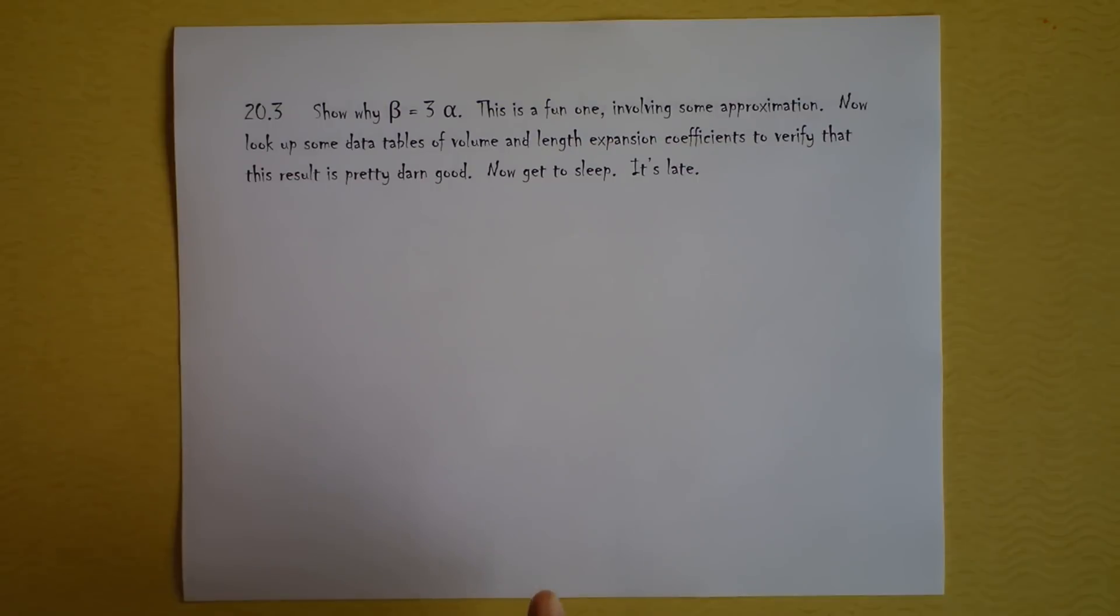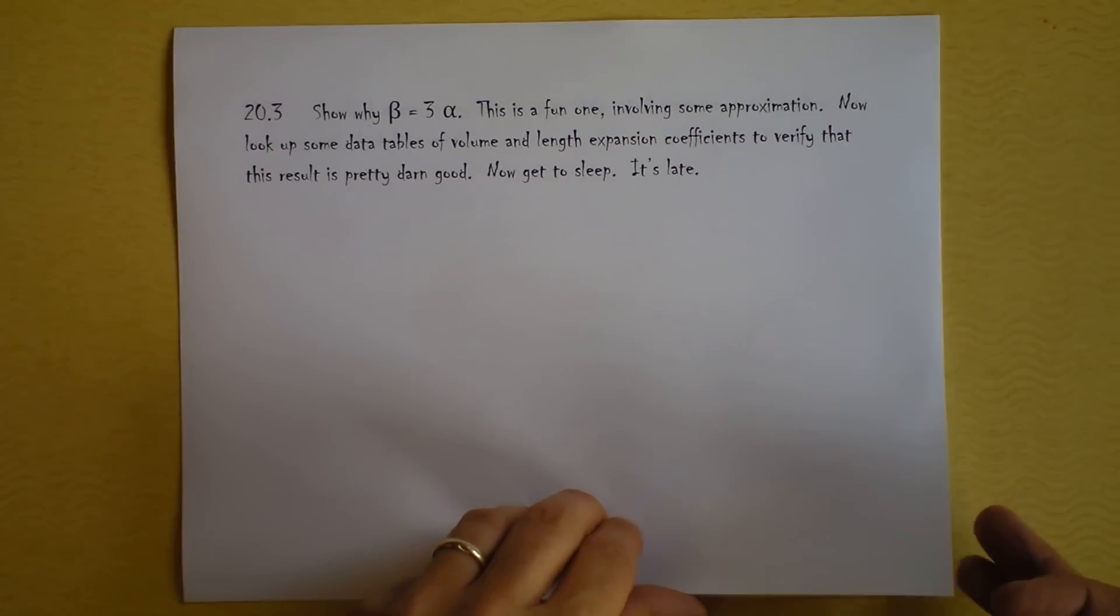Beta would be the coefficient of volume expansion and alpha is the coefficient of length expansion. And I want you to prove that relationship right there. It again requires a little bit of approximation as you can see. And then I want you to verify that it is a really nice approximation. It's actually really good. But it's late so go to bed.